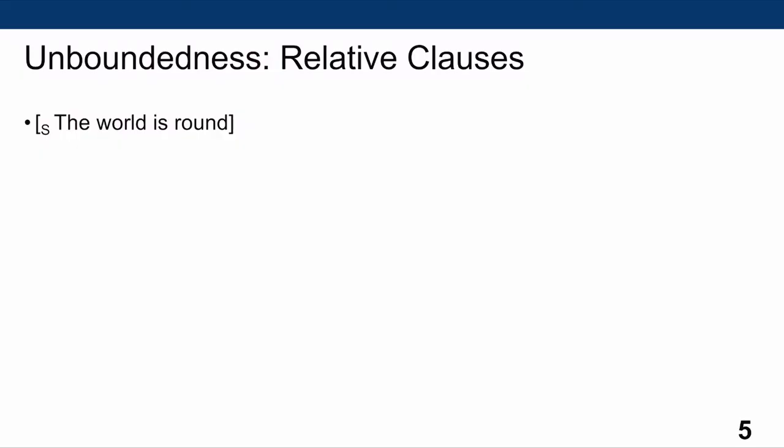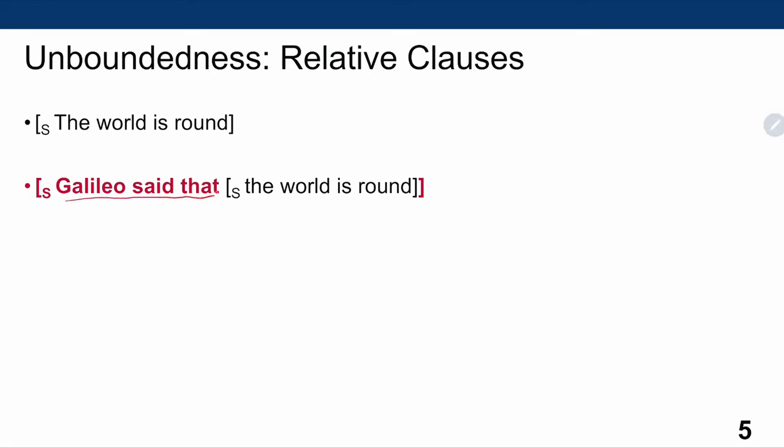Let's look at a couple of examples of unboundedness. The first example is one we've already seen in week one: relative clauses. If I start with a sentence like 'the world is round,' I can embed it into another sentence and say 'Galileo said that the world is round.' Here I have a matrix clause — 'Galileo said that' — and then a relative clause — 'the world is round' — which is exactly the same as the sentence we had before.